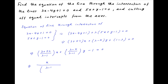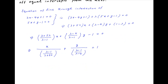This can be rearranged as x divided by (lambda minus 1)/(3 plus 5 lambda) plus y divided by (lambda minus 1)/(lambda minus 4) equals 1. This is the equation of a line in the intercept form, and therefore the x-intercept is equal to the denominator of the first term, and similarly the y-intercept is equal to the denominator of the second term.